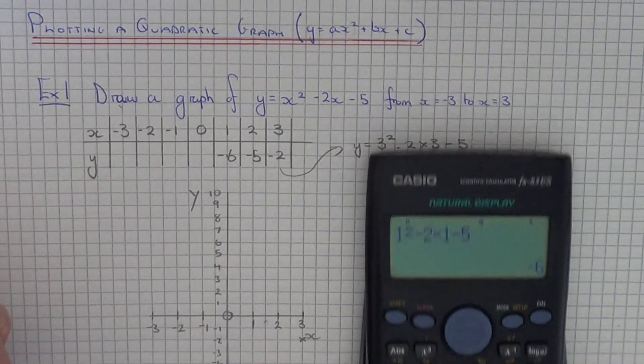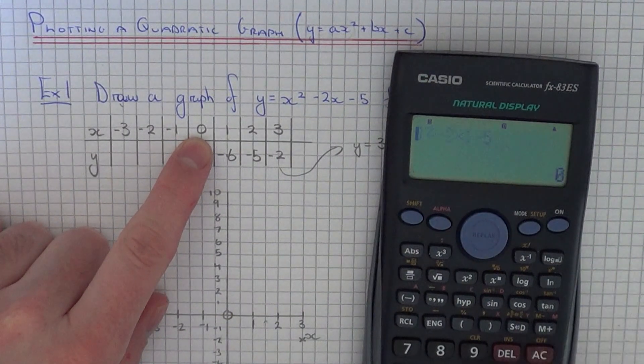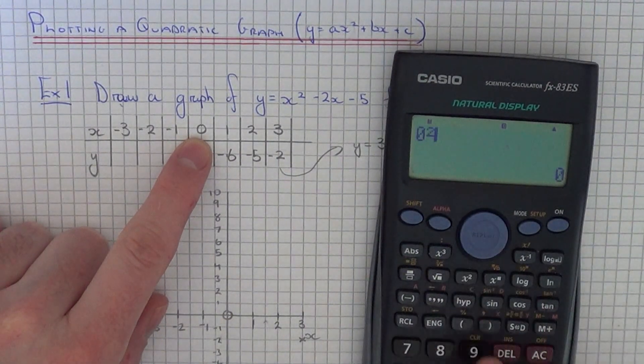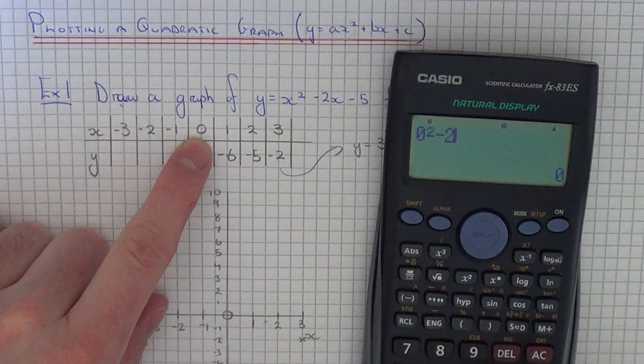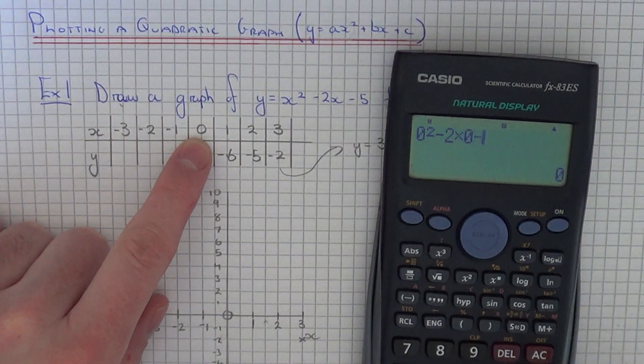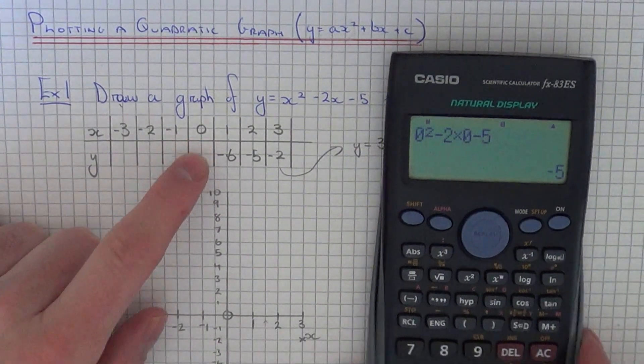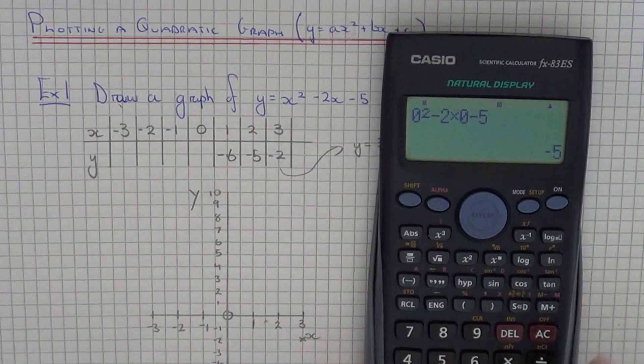So next we're going to do x equals 0. So 0 squared minus 2 times 0 take away 5. And that gives us an answer with minus 5.